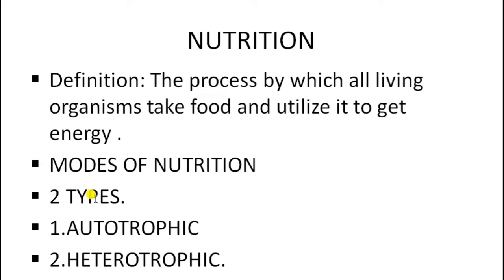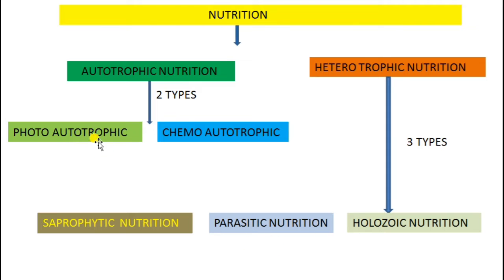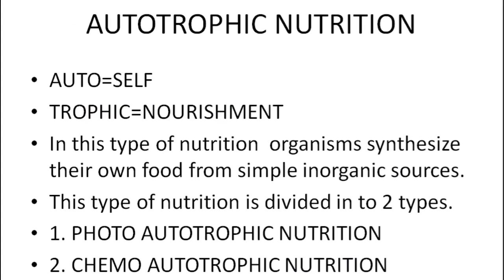Depending upon the mode in which they take food, nutrition is divided into two types: autotrophic nutrition and heterotrophic nutrition. Autotrophic nutrition is further divided into two types — photoautotrophic and chemoautotrophic — while heterotrophic nutrition is divided into three types: saprophytic nutrition, parasitic nutrition, and holozoic nutrition.